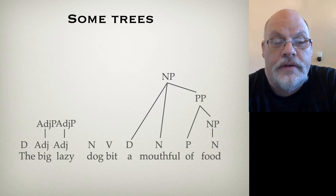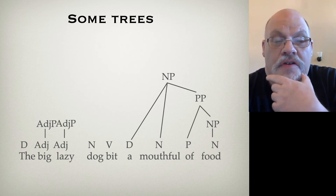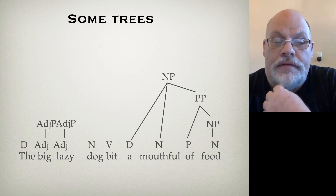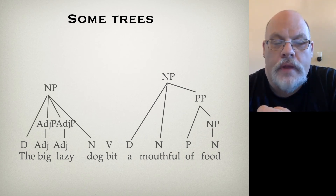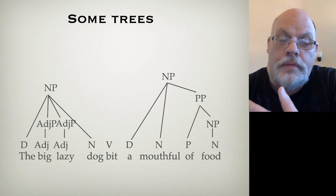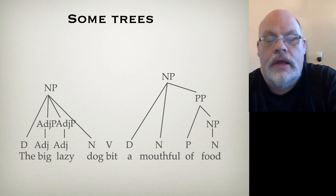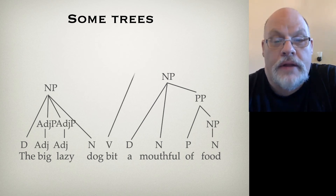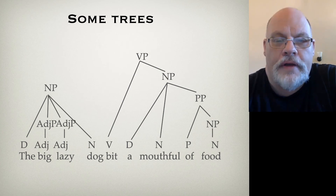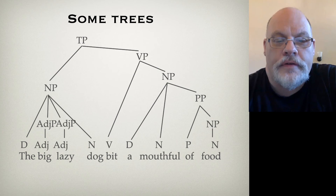We have one more noun phrase: 'the big lazy dog.' Here, dog is the head and it has three modifiers: the determiner and the two adjective phrases — we put those all together inside the noun phrase. Now we've done our noun phrases and prepositional phrases, so we do the VP. The verb and the noun phrase together form the VP. Then you have a noun phrase followed by a verb phrase — that's a TP — so we stick a TP on top. And there's our tree for this sentence.